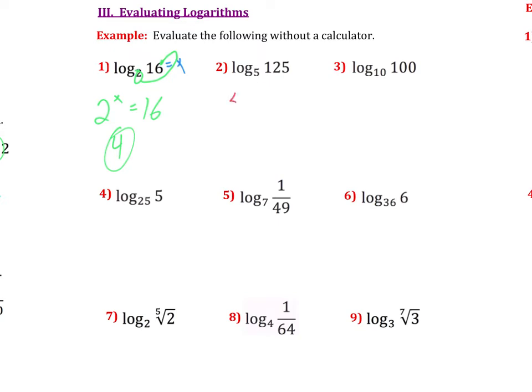On number 2, we'd have 5 to what power is 125? Well, that's just 5 to the 3rd. Number 3 is saying 10 to what power is 100? That's just a 2.